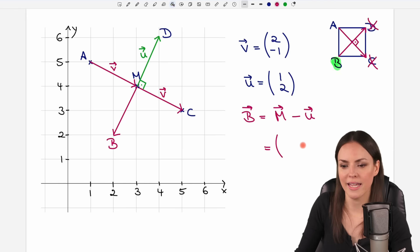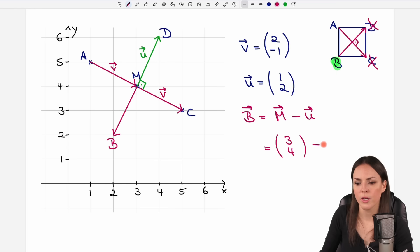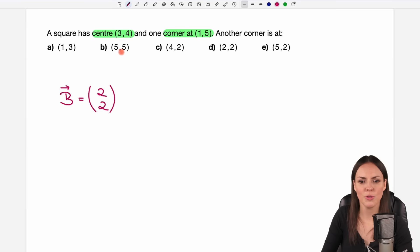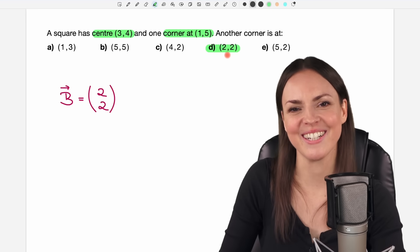What do we get then? Our center was at (3,4). We subtract u, which is (1,2). And if we calculate this, 3 minus 1 equals 2, and 4 minus 2 equals 2. And now let's just pray that (2,2) is somewhere. Yes, it is. So we solved this problem.